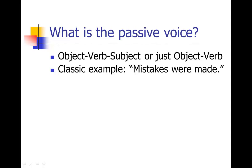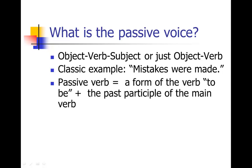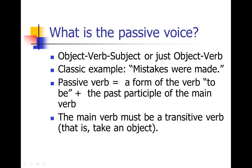You can recognize the passive voice by looking for the passive verb, which will have two parts: a form of the verb to be — that's is, are, was, were, be, been, or am — and then a main verb in the past tense that takes an object, what we call a transitive verb. For example, she throws the ball — the verb throws takes the object the ball. Contrast that to she runs, where run does not take an object, so there's no way to turn that into the passive voice.